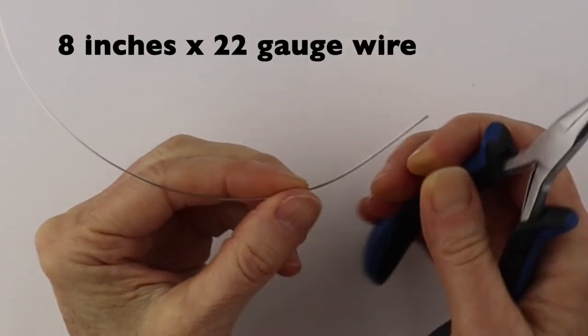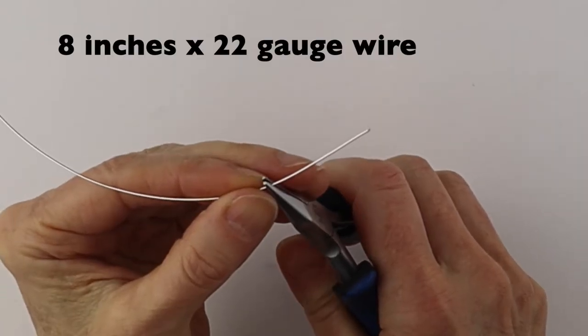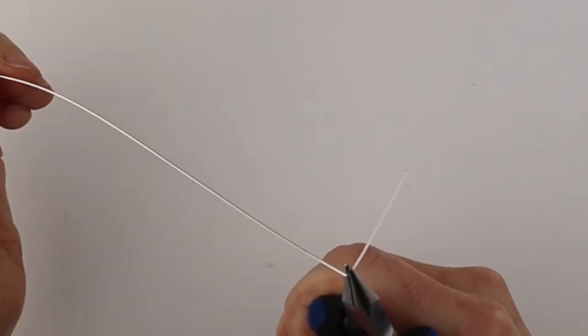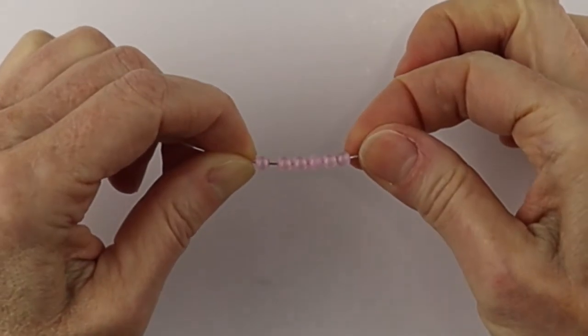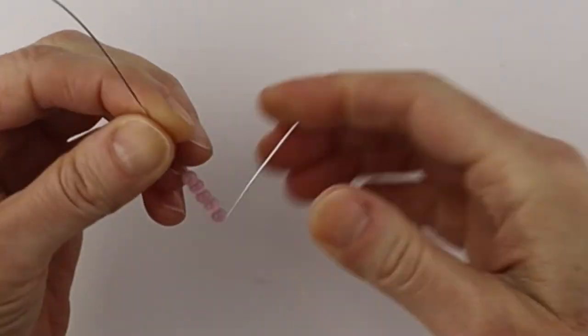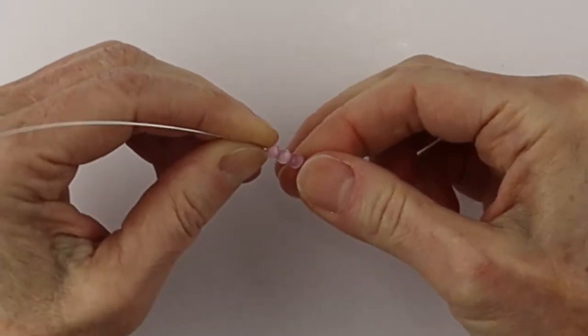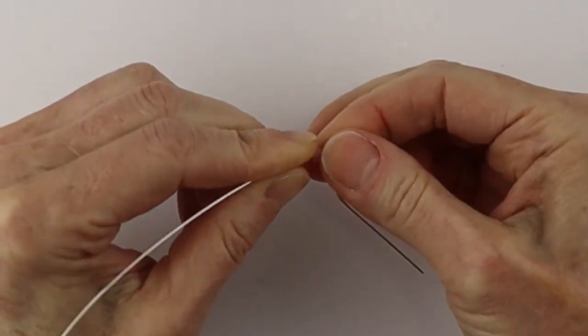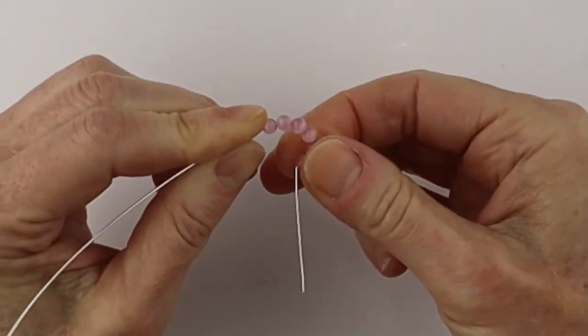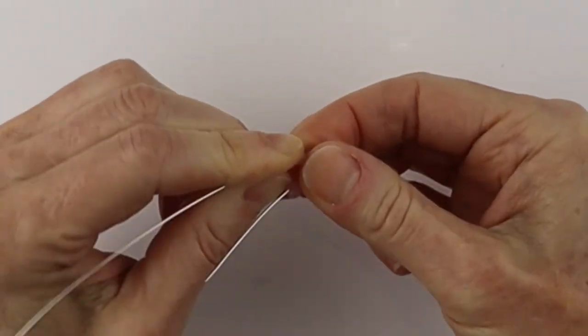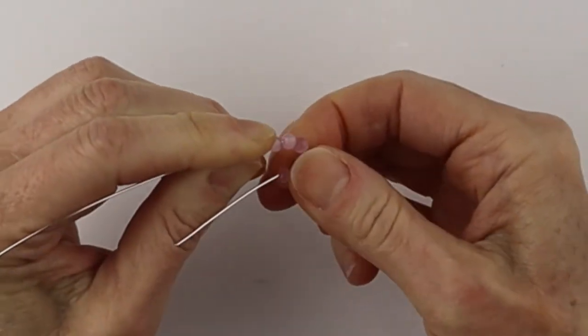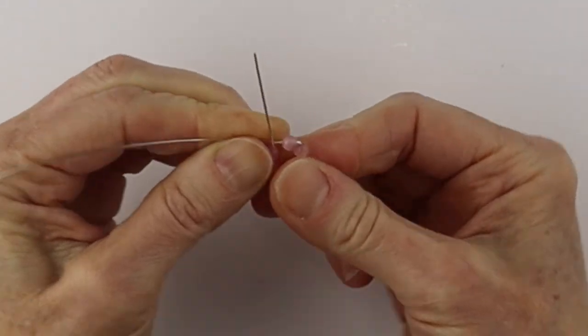Now to make the triple flowers, we're taking an eight inch piece of 22 gauge wire. Bend it to the side, put on six four millimeter beads. Hold each bead and turn the wire around just to make a gradual circle. You want it nice and even, so you just go slowly bead by bead and curve the wire around.